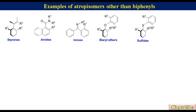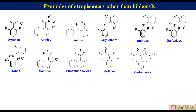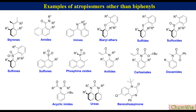Other examples of atropisomers include sulfites, sulfoxides, sulfones, phosphine oxides, anilates, carbamates, oxoamides, cyclic amides, ureas, benzodiazepinones, and many others.